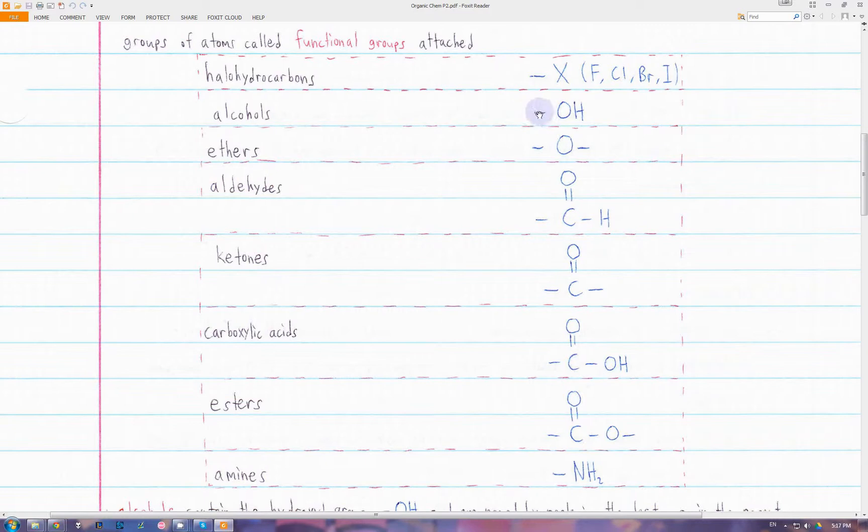Over here, the open bonds represent that these functional groups are bonded to a larger chain of hydrocarbons. For example, this OH group might be bonded to a CH3 or a CH3CH2. This open bond just represents a hydrocarbon fragment.